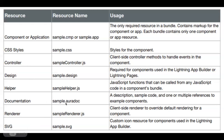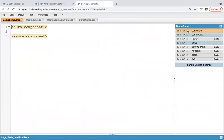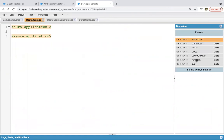The documentation file extension is .auradoc — it provides a description, sample code, and one or more references to example components. The renderer 'SampleRenderer.js' is a client-side renderer to override default rendering for a component. The SVG file 'sample.svg' is a custom icon resource for components used in the Lightning App Builder. In total, a component bundle has eight files and an application bundle has seven files.